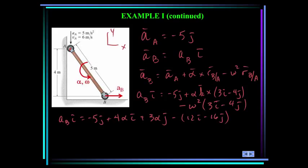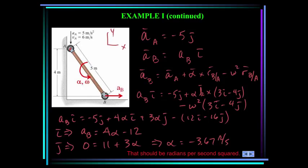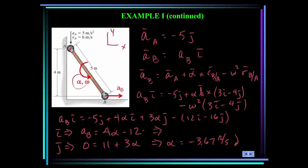Equating i components: acceleration of B equals 4 alpha minus 12. Equating j components: 0 equals negative 11 plus 3 alpha — wait, 0 equals negative 5 minus 16 plus 3 alpha, giving alpha equals minus 3.67 radians per second squared. It came out negative, so alpha is clockwise. Substituting that alpha back in, the acceleration of B equals minus 26.7 meters per second squared. It's negative, so the acceleration of B is directed to the left.